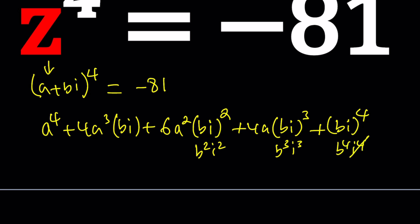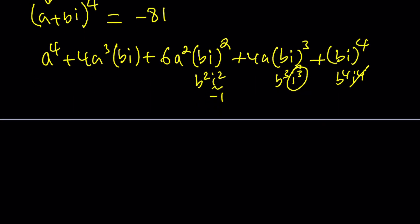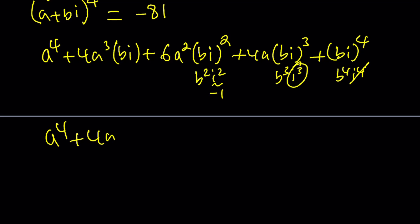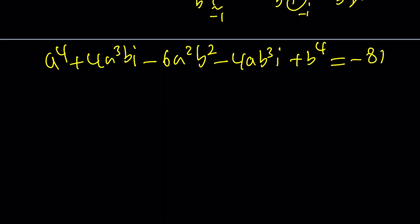And then if you kind of expand this a little bit, it's going to give you B squared I squared, B cubed I cubed, and B to the fourth I to the fourth. Remember, I to the fourth is 1, I squared is negative 1. So we get A to the fourth plus 4A cubed BI minus 6A squared B squared minus 4AB cubed I and finally plus B to the fourth.